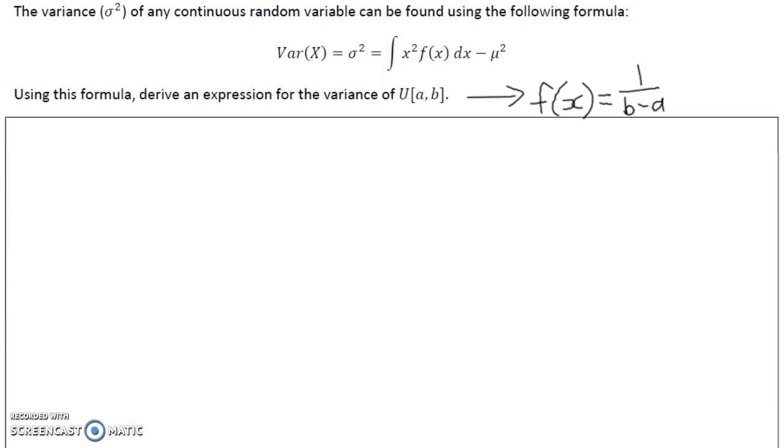We're now going to find the variance of the uniform distribution, and of course the uniform distribution has probability density function 1 over b minus a, which is a constant.